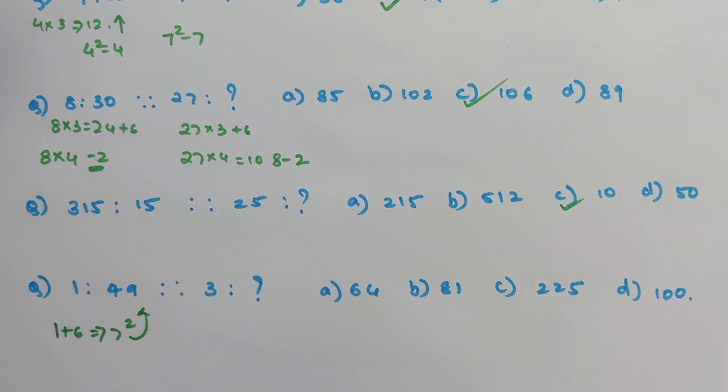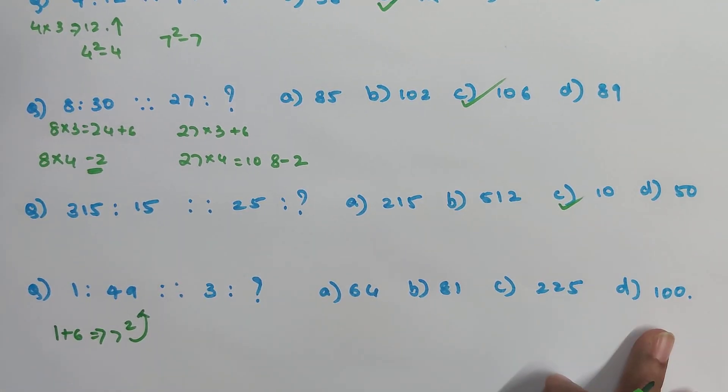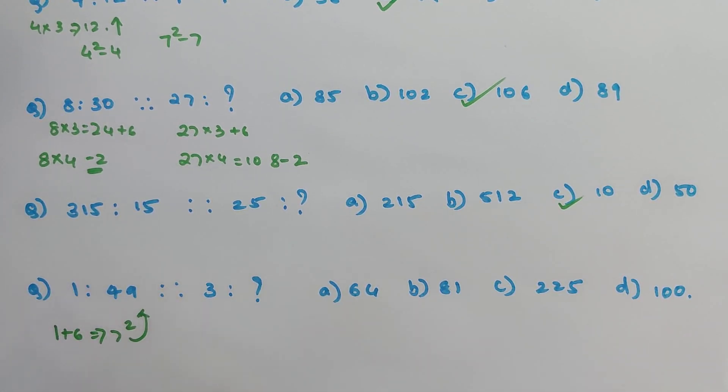And if you look at your answers also that the options also had a hint, all your options are squares. So by default you would have a square or you will have to work with a square.